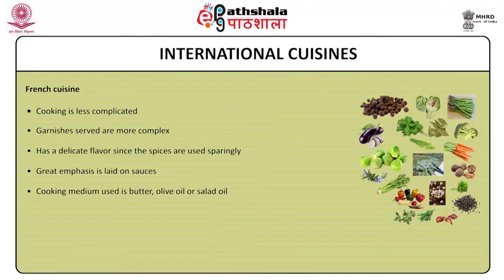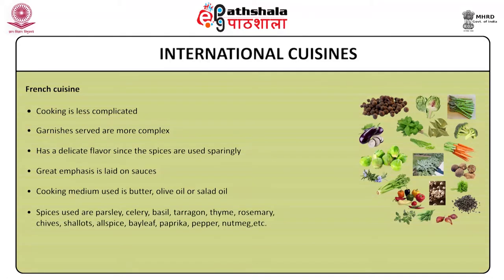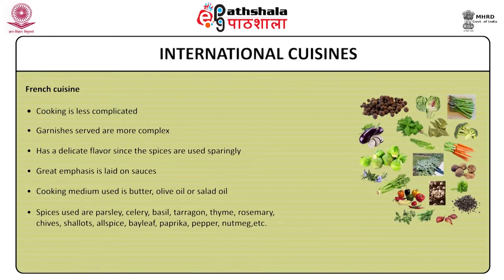The dishes are not greasy but give a lightness to the taste. Spices and herbs give a stable flavour, taste and originality to the dish. Some of the spices and herbs used in French cuisine are parsley, celery, basil, thyme, rosemary, chives, shallots, bay leaf, paprika, pepper, nutmeg etc. Vegetables are served with main courses as accompaniments and act as fillers to meat dishes. They add colour to the menu. A meal is completed with potatoes as they give satiety value.